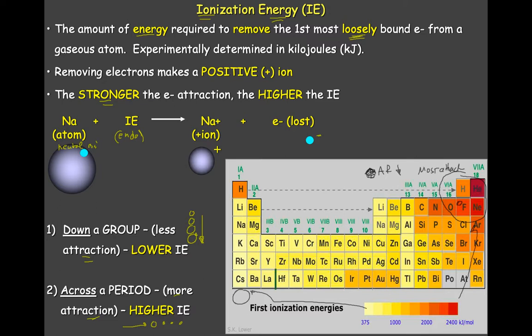Difficult to pull off electrons. So again, it's just a data point, and it really goes opposite the radius — as the radius goes down, the IE goes up; as the radius goes up, the IE goes down because of the attraction. You're going to have less attraction over here. And that's really what you want to know, because eventually it's going to help define what these atoms are going to do.